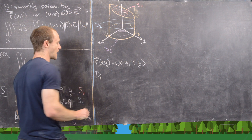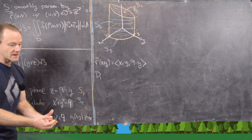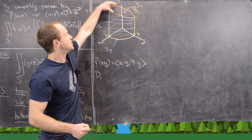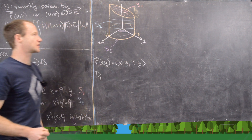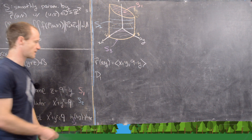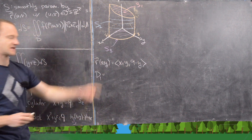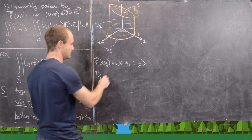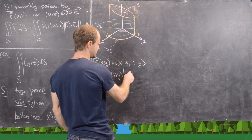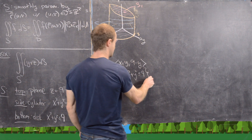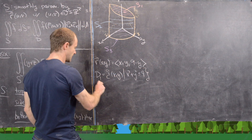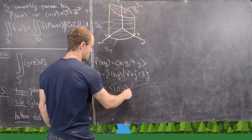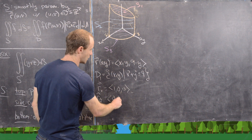The domain region D in the plane is whatever lies directly below the surface S1 — that ellipse — which is just the disk below it. So D is all (x, y) with x² + y² ≤ 9. Now R_x = (1, 0, 0) and R_y = (0, 1, −1).